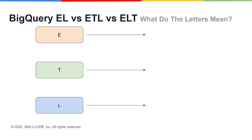The first letter E stands for extract. Here we are extracting data from its original source. This data is brought in from a number of sources and is in both structured and unstructured conditions. The objective here is simply to bring all the relevant data into a single repository. Data can be extracted from CRM systems, mobile apps, marketing and sales applications, analytics tools, and even other data warehouses, to name a few.